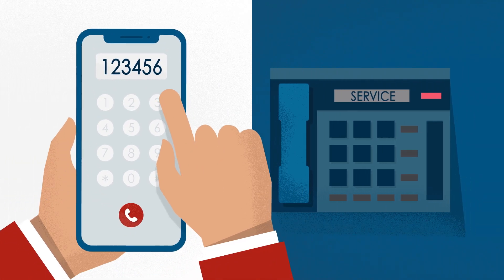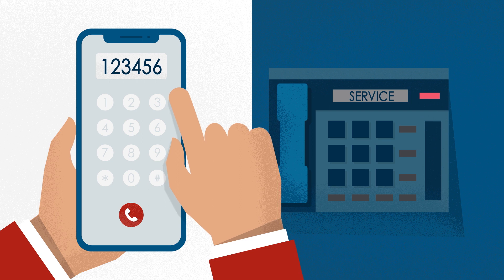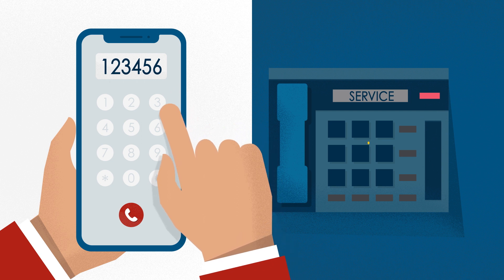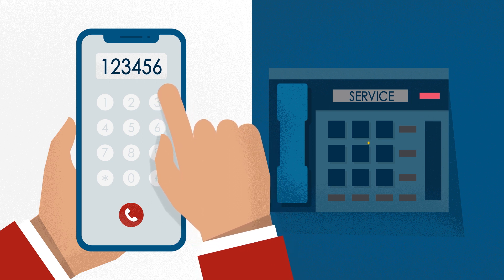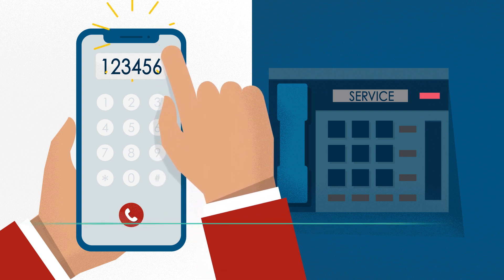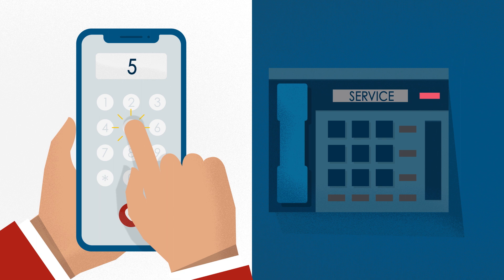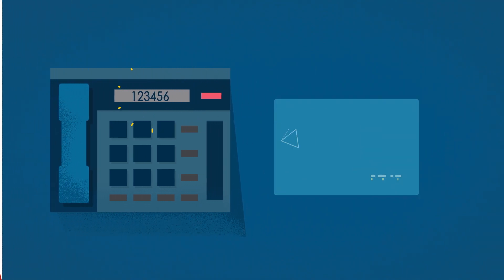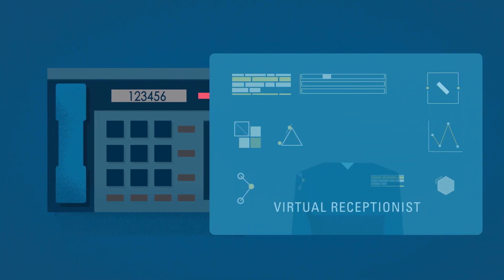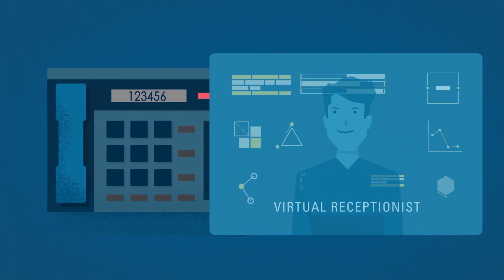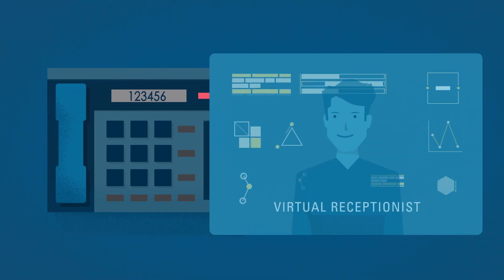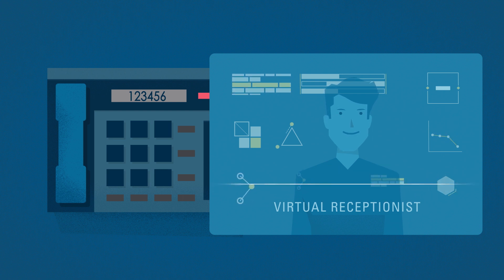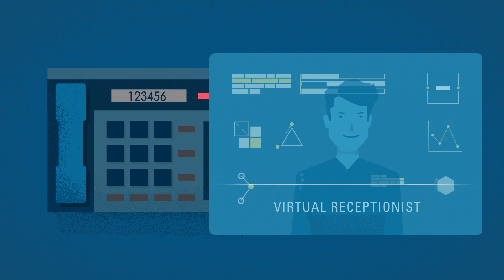What's more, you can also create sub-menus for your departments. Press 5 for Service. In this example, the caller will then reach the service menu. From there, you can ask them to press 1 for status updates, press 2 for scheduling.